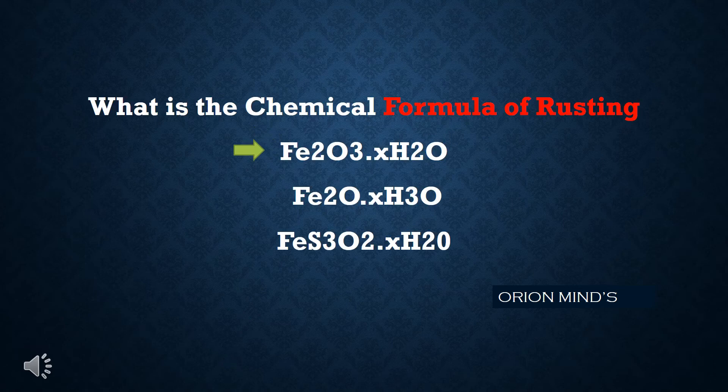What is the chemical formula of rust? The answer is Fe2O3·xH2O.